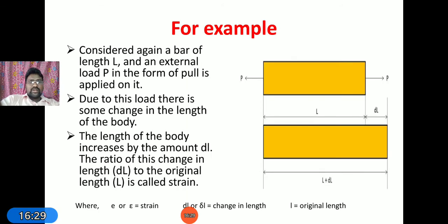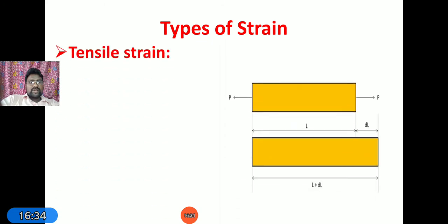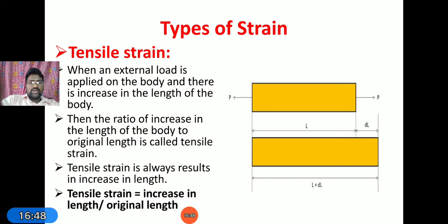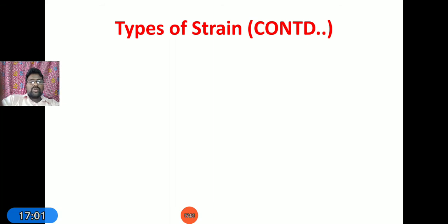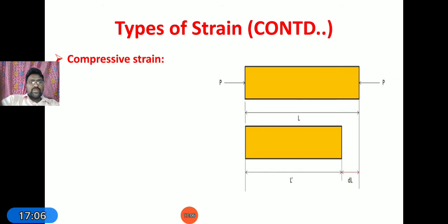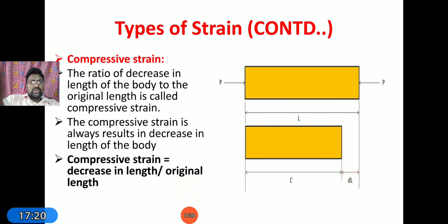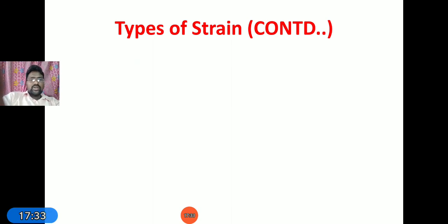There are different types of strain. Tensile strain occurs when a material is subjected to a tensile force, causing elongation. The ratio of increase in length to original length is tensile strain. Compressive strain occurs when a material is subjected to two equal and opposite pushes, causing the material to shorten. The ratio of decrease in length to original length is known as compressive strain.